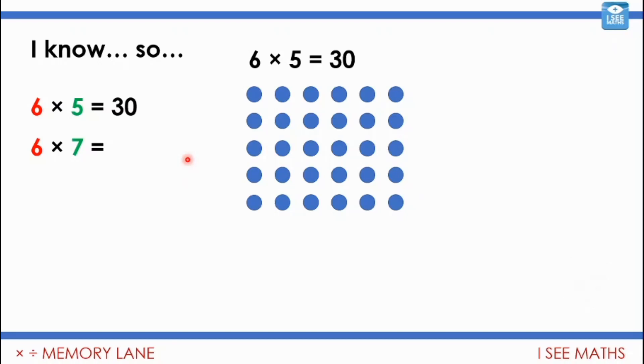Let's have a think. What stays the same, what changes? It's still lots of six, except rather than having five lots of six, it's going to be seven lots of six. The picture will have two more sixes, so in total it'll be 12 more.